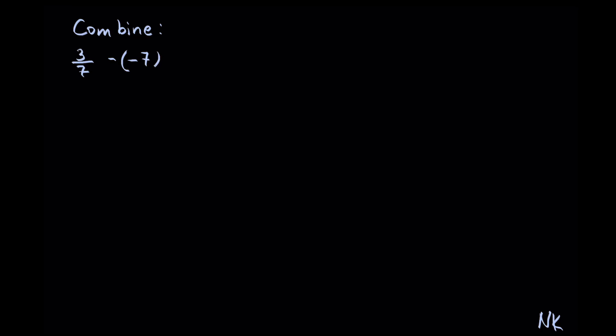Here we have to combine 3 out of 7 minus negative 7. So the first thing you need to do is simplify the signs. Negative times negative gives us positive 7. 3 out of 7 will stay the same. A whole number is out of 1. So now we need to figure out the least common denominator. LCD for this expression: we have 7 in the first denominator and we have 1 in the second denominator, so LCD is 7. Pretty much if you just have a fraction and a whole number, the LCD is the denominator of that fraction because the whole number will always have 1 in the denominator.